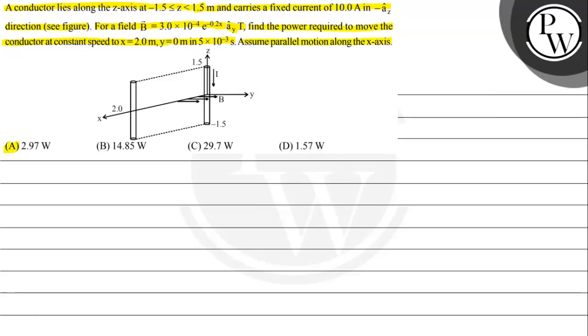Option A given at 2.97 watt, option B 14.85 watt, option C 29.7 watt, option D 1.57 watt. So to understand the question we need to understand about the concept of a wire carrying current when placed in a magnetic field